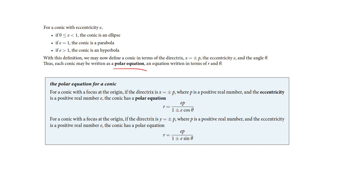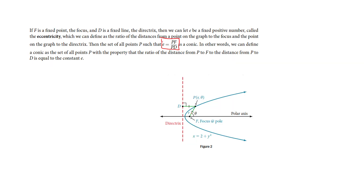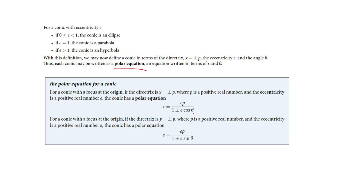Wherever we are on the conic section, it's creating an angle. I don't know why they're selecting these or how they derive these formulas, but here are the polar formulas that we can create. We have a version with cosine and a version with sine, where E is our eccentricity and P is that value that we can use to help build the equation.